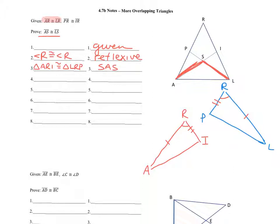The next thing we're going to say is: triangle ARI is congruent to triangle LRP. The reason for that is we have SAS. Now here's where you have to do a little bit of thinking. We know those two triangles are congruent, which means we know every set of corresponding things about them is congruent.